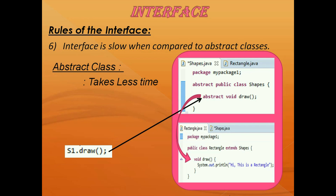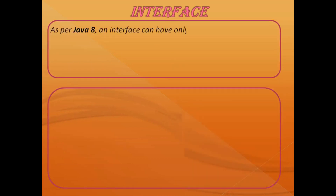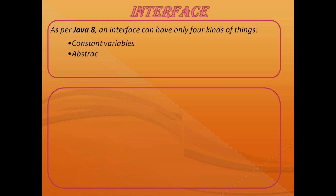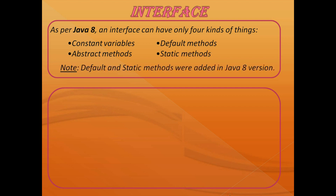Whatever we have discussed so far is as per Java 8. As per Java 8, an interface can have four kinds of things: constant variables, abstract methods, default methods, and static methods. Default methods and static methods were added to interfaces in Java 8 — they were not there in Java 7.